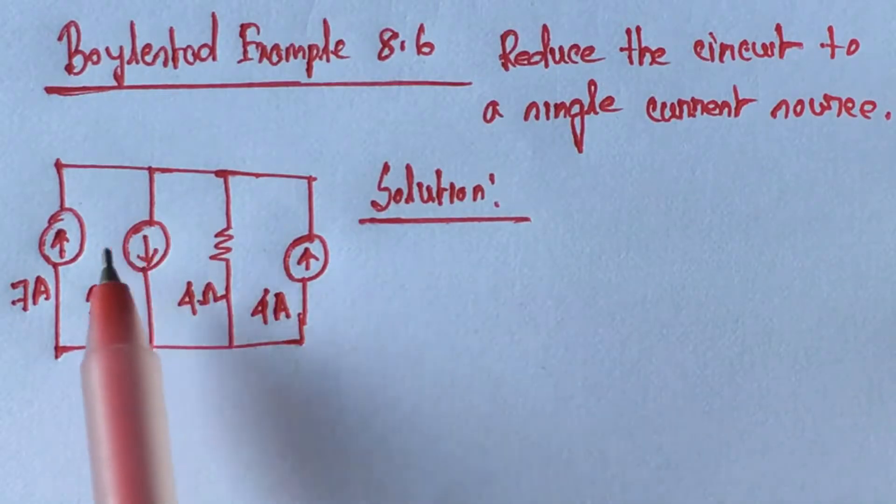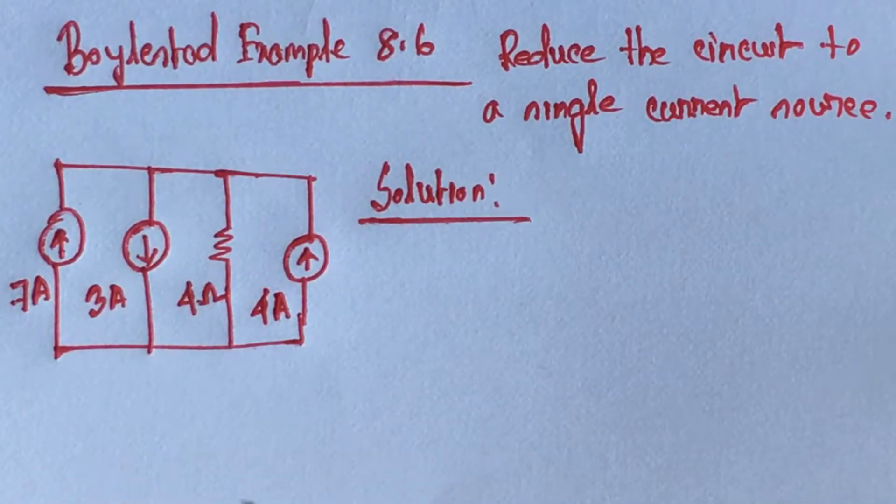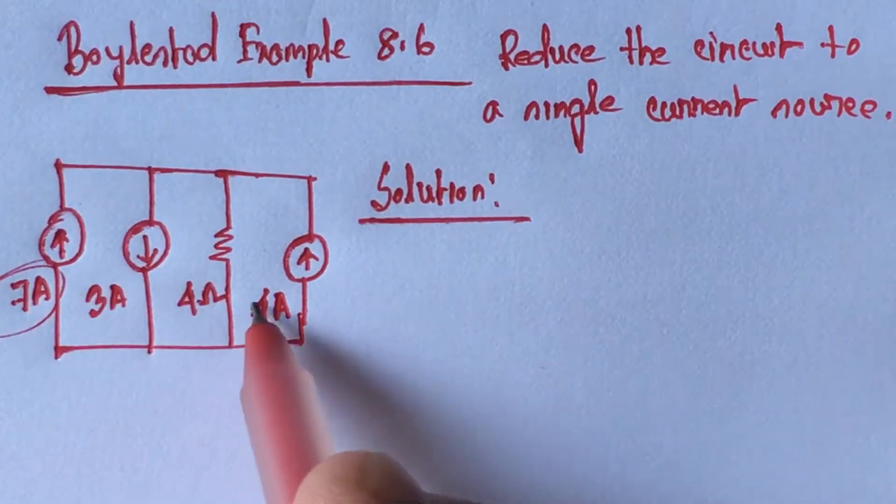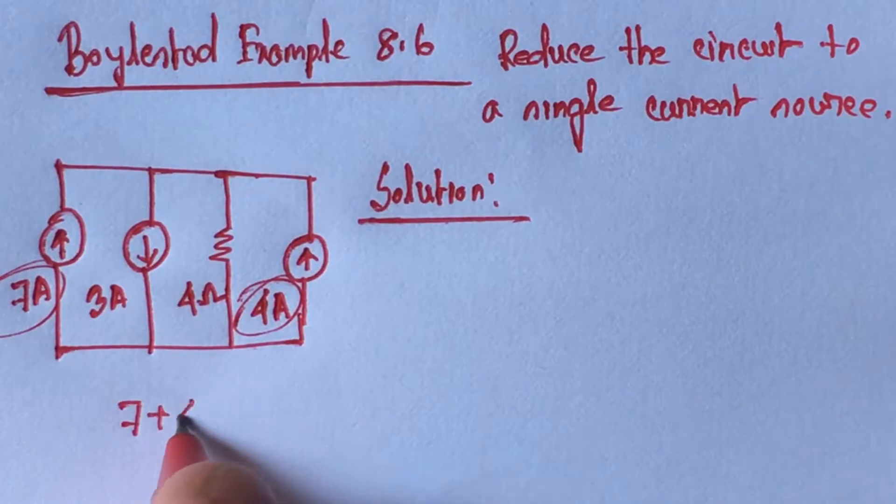From the circuit we see that 7 ampere and 4 ampere current is flowing upward. So this 7 ampere and this 4 ampere current will be added simply that is 7 plus 4.